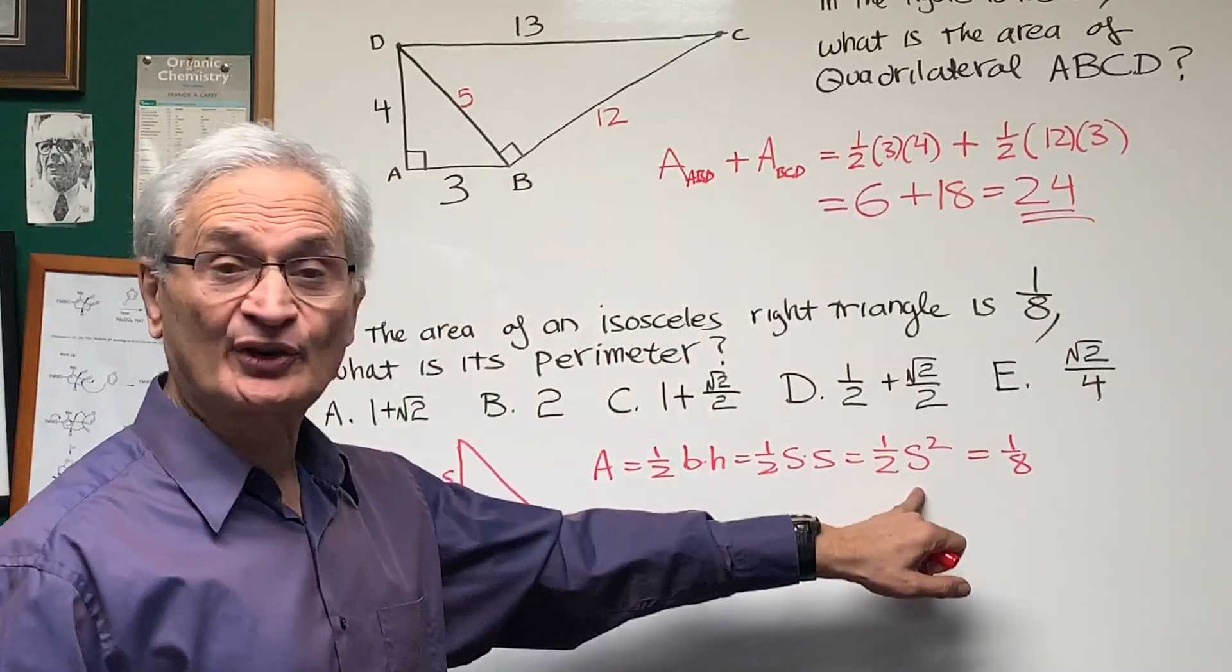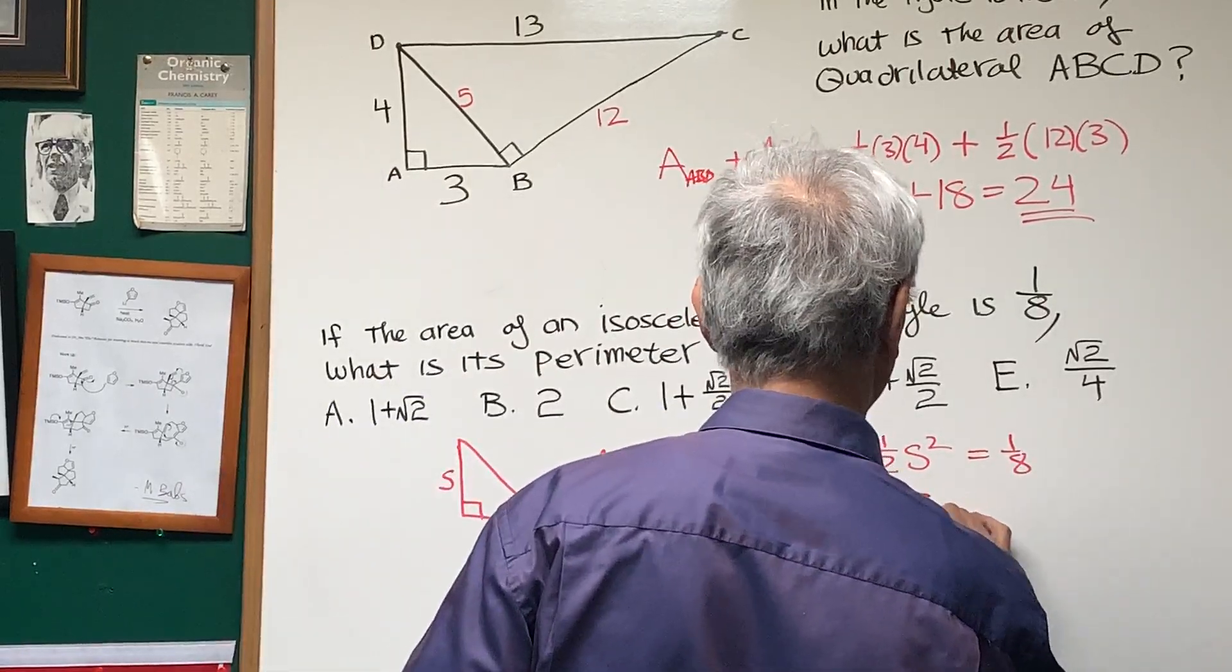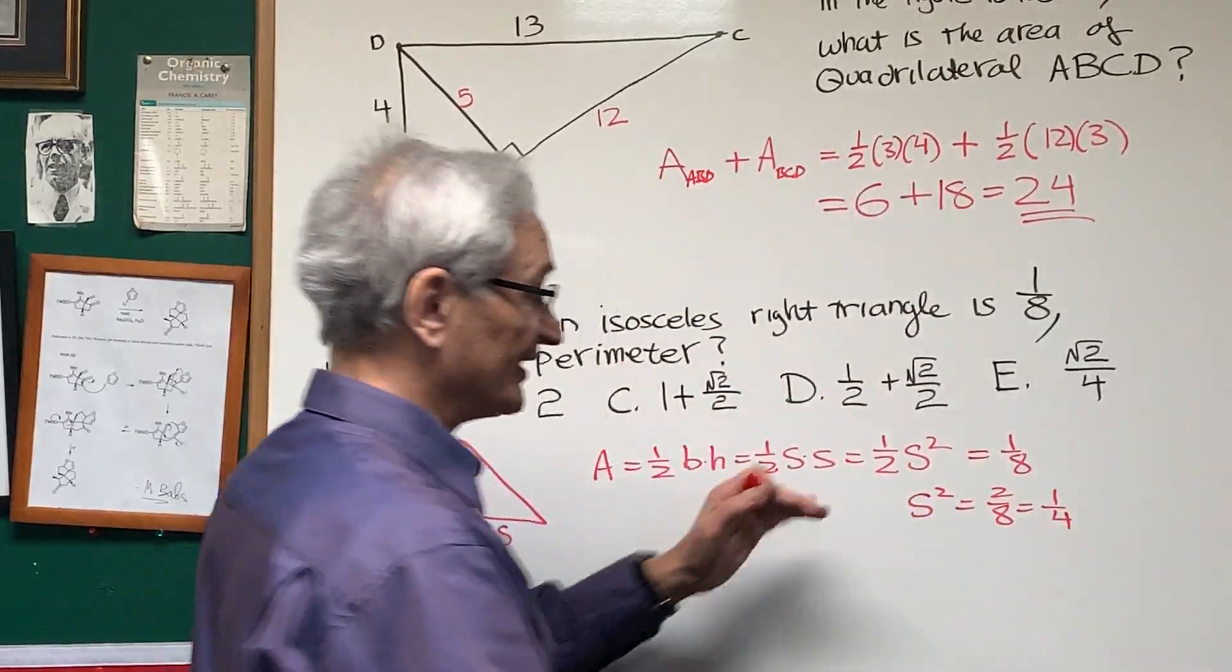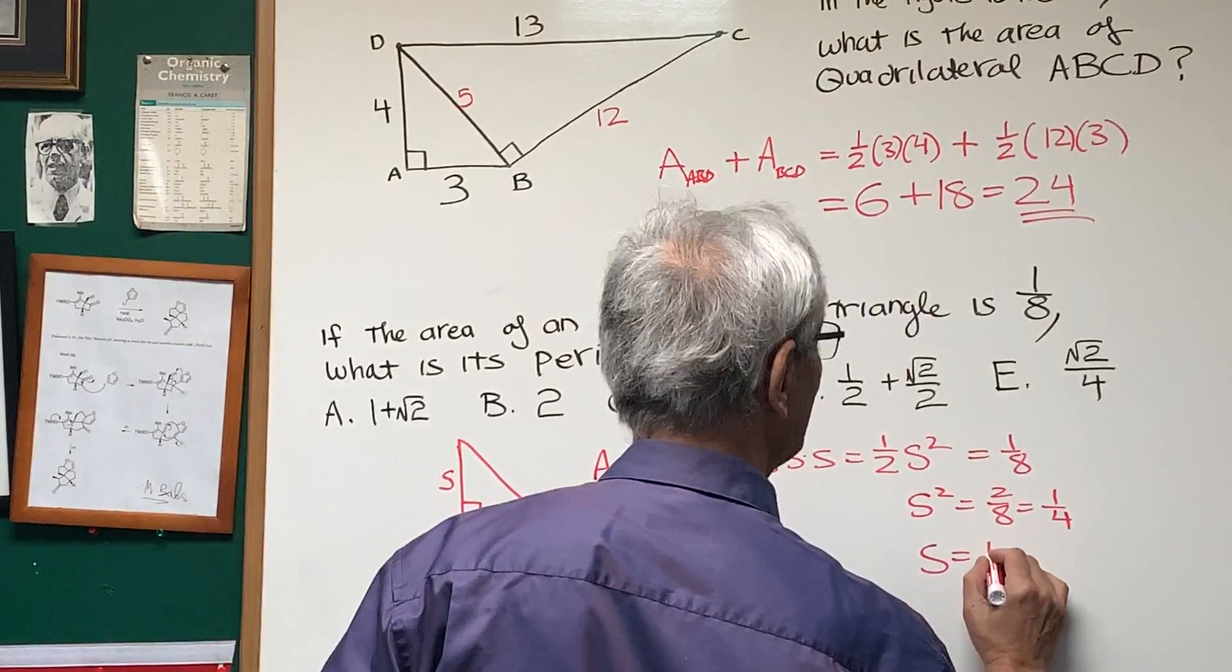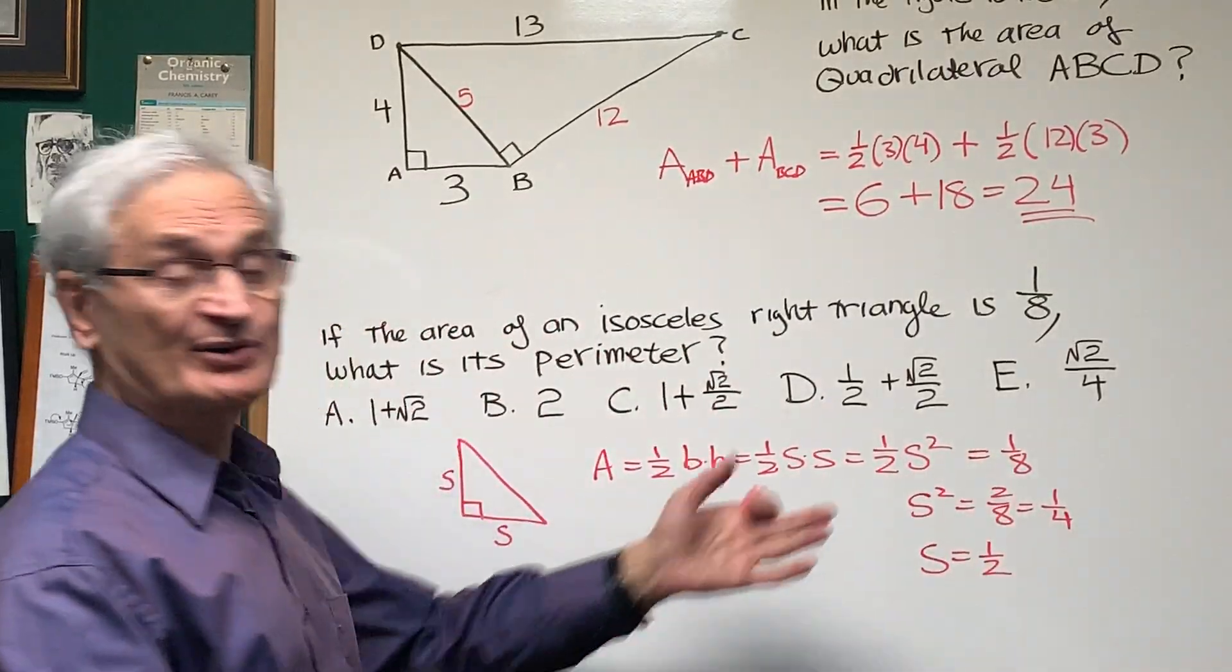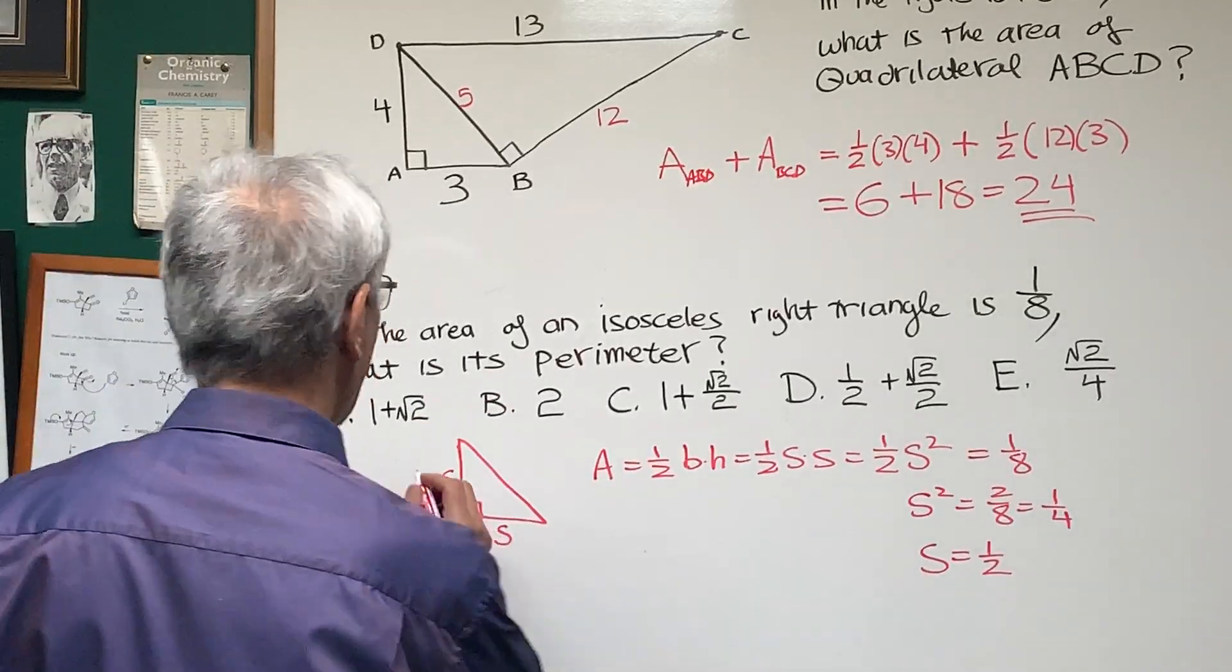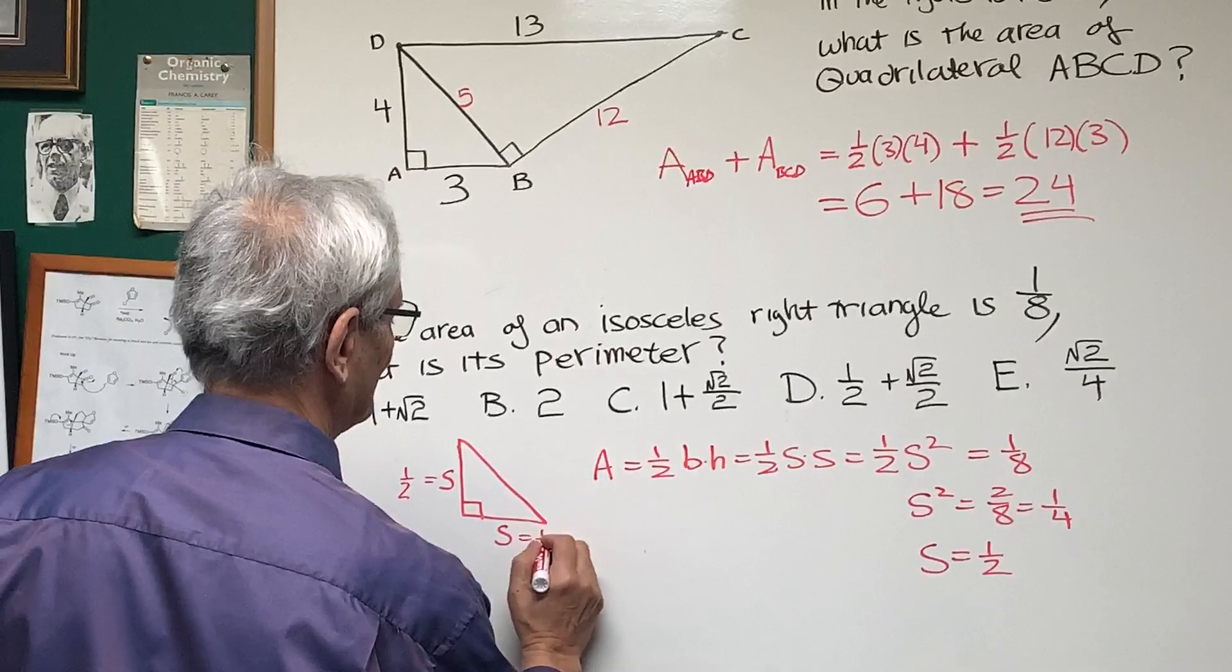Now, we're told that that area is one-eighth. So, I'm going to set this equal to one-eighth. And then, solve for s. Let's multiply both sides by two, and we'll get s squared equals two over eight, or one-quarter. Taking the square root of both sides, we find out that s is equal to one-half. That's the square root of one-quarter. Now, what are we looking for? The perimeter. So, now we can label this s is equal to one-half.